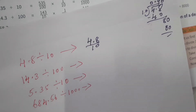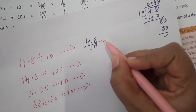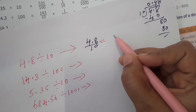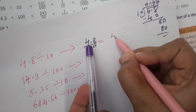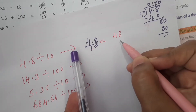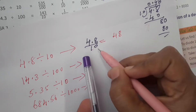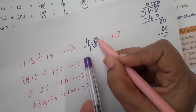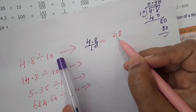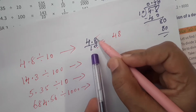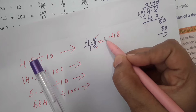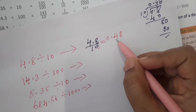Without dividing, we can write the answer directly. For 4.8 divided by 10: skip the decimal point and write the numerator as 48. Then count: the decimal point gives 1 digit after it, and divisor 10 has 1 zero — total 2. So after 2 digits from the right, we place the decimal point. The answer is 0.48. This is the actual shortcut method.